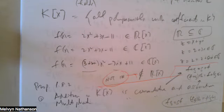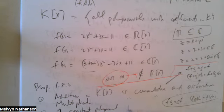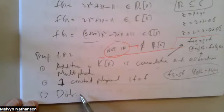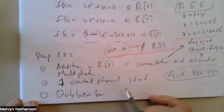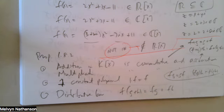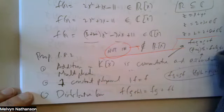We have an identity under multiplication: this is the constant polynomial f(x) = 1 for all x, and 1 times any polynomial is just the polynomial. We also have a distributive law: for any polynomials, f·(g + h) = fg + fh. These are the most elementary properties of polynomials that in calculus you use all the time without necessarily giving a name to them.